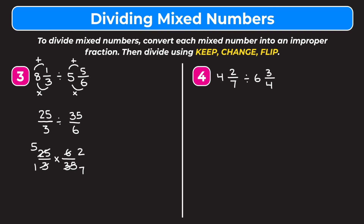Multiplying straight across: five times two gives us ten on top, one times seven gives us seven on the bottom, so we get ten over seven. Writing as a mixed number: seven goes into ten one time with three left over, keeping the denominator of seven — so we get one and three-sevenths as our answer.